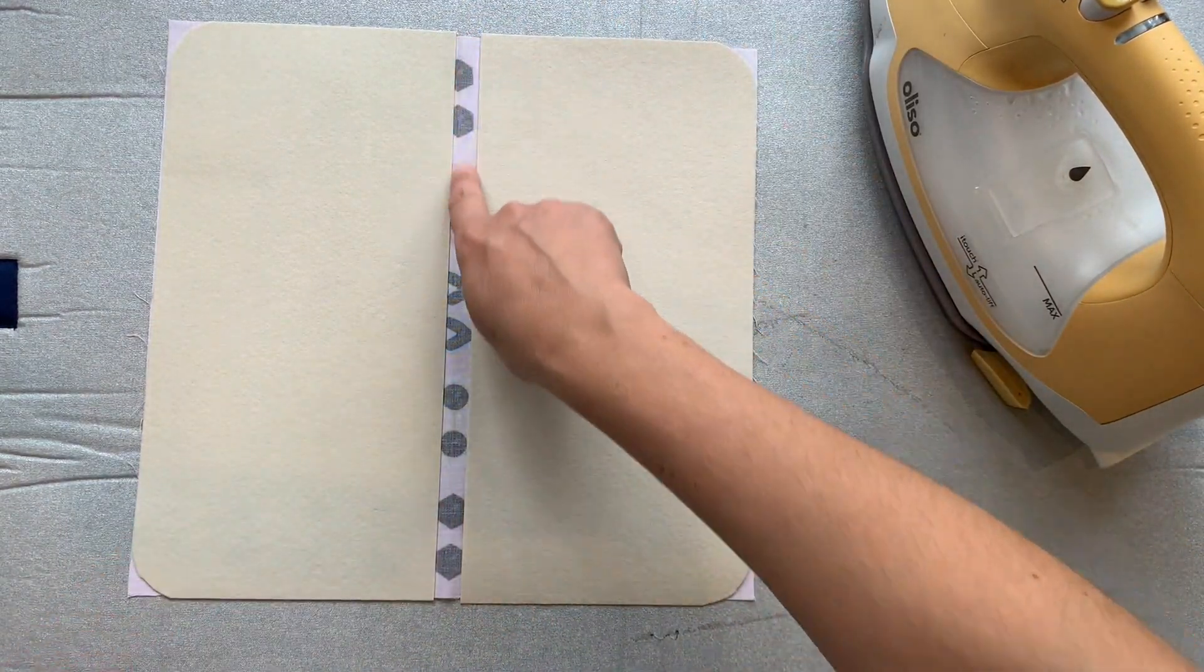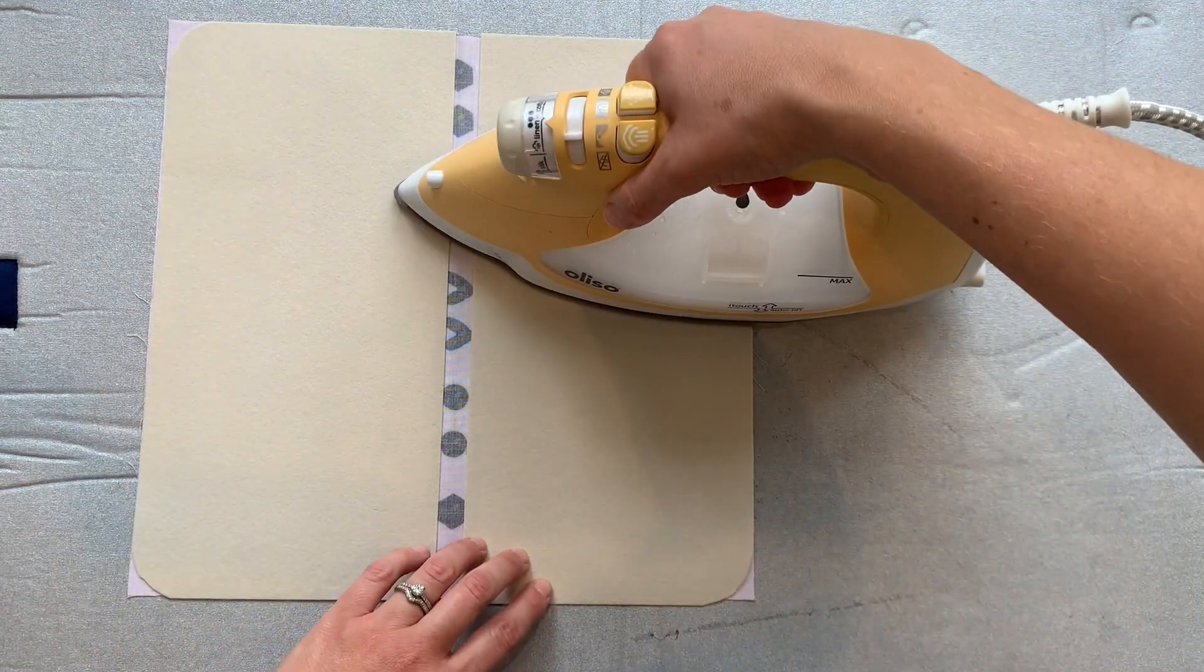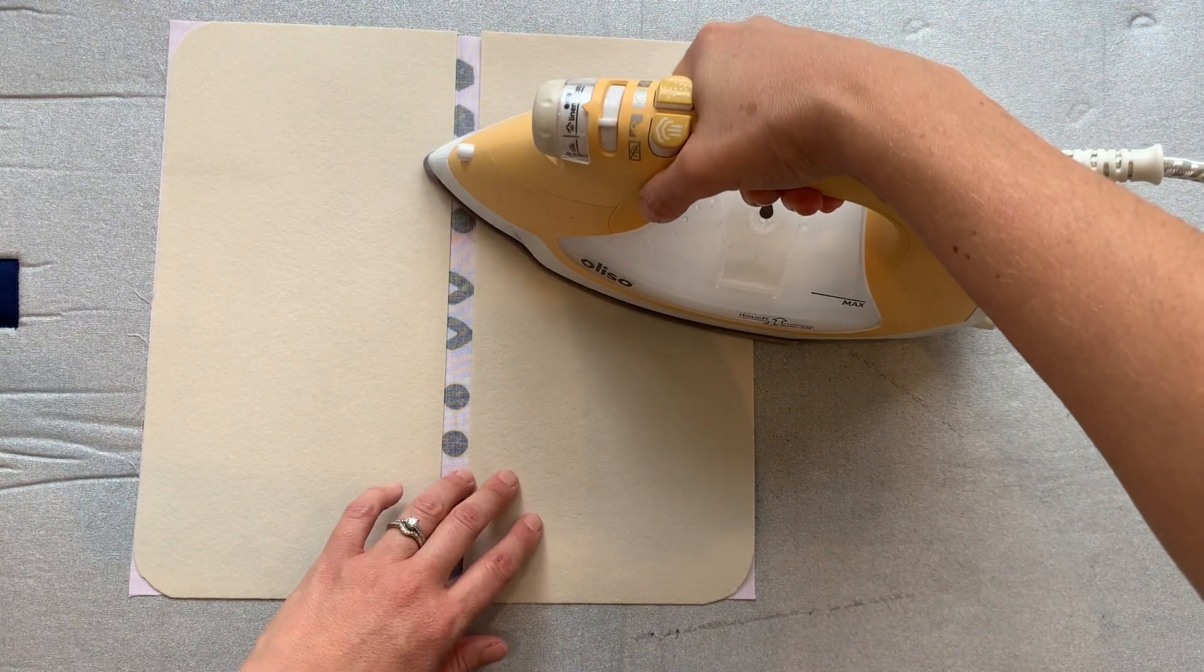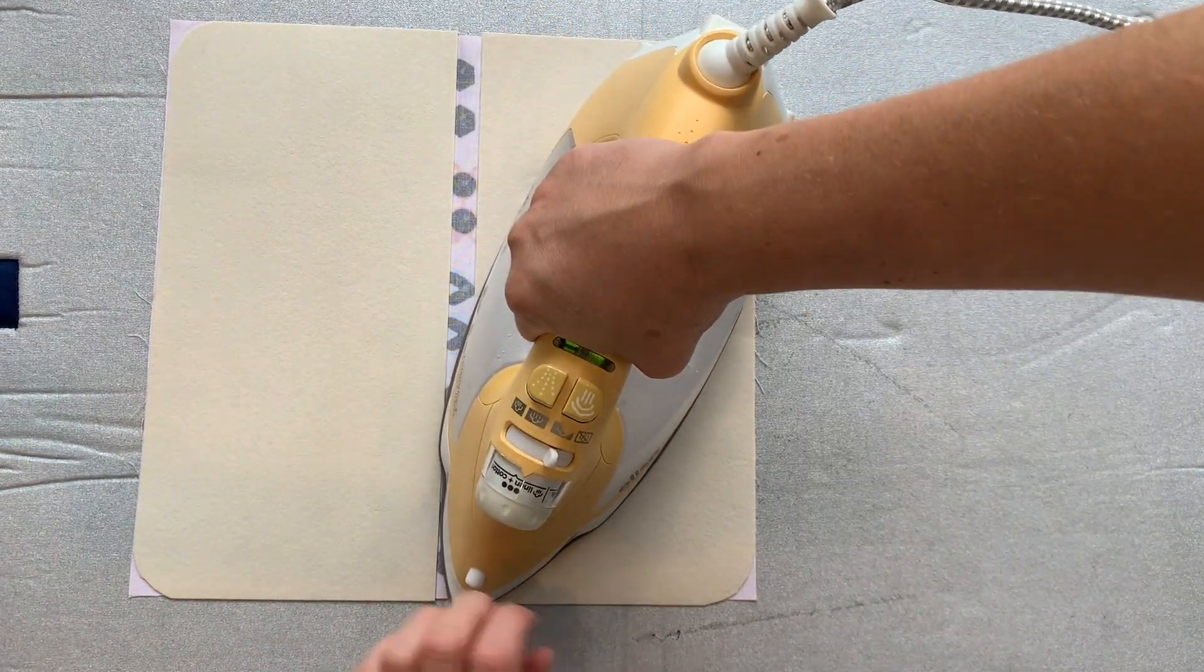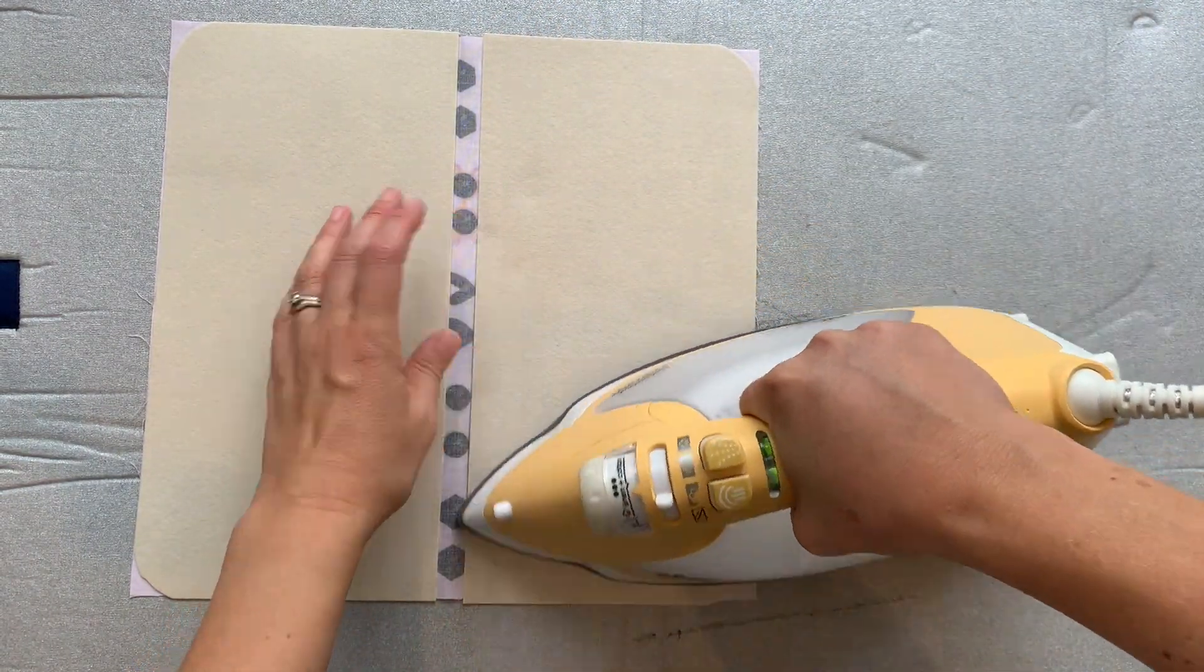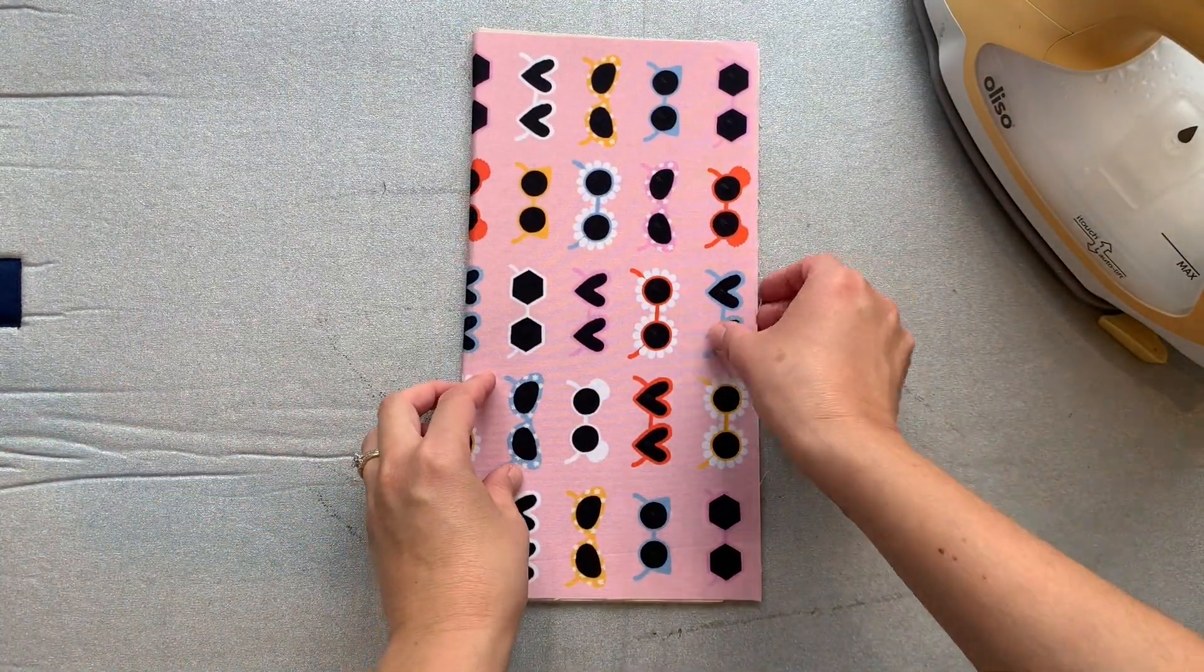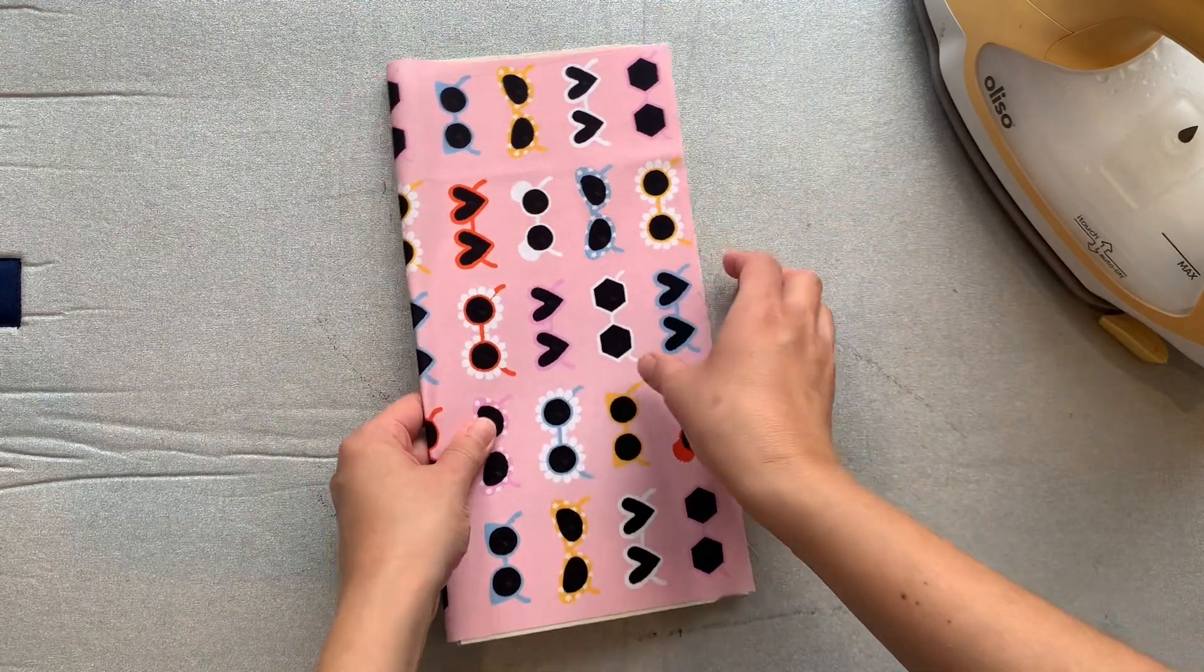And you do want to have this spine here, which isn't interfaced or isn't covered with the decoville. And that spine will allow the wallet to fold in half once it's finished.